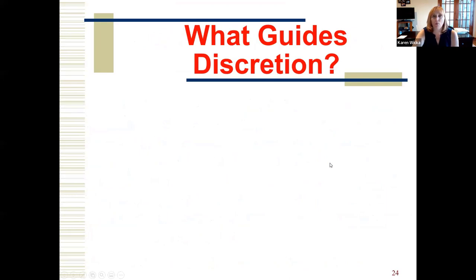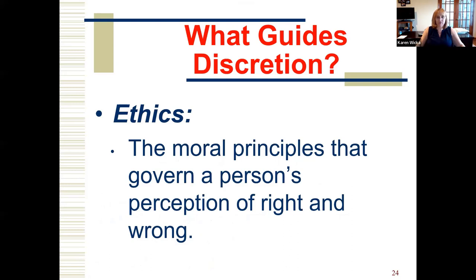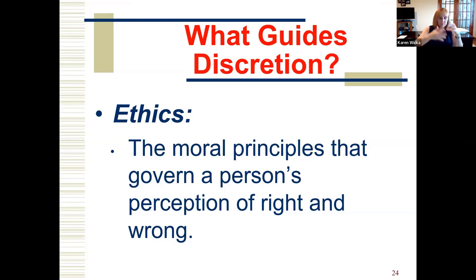We have to think about what guided your choice — what guided your discretion. A lot of times it's ethics. Ethics are the moral principles that direct what's right and wrong. We also have professional ethics — within your profession you learn guidelines that govern your discretionary choices. It's what you personally think is right and wrong combined with what your profession sets as guidelines to help form your discretion. We will talk a lot about discretion with police, courts, and corrections throughout the semester, and how ethics shape each of those things.